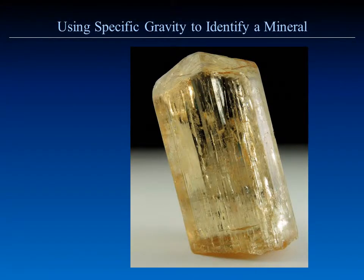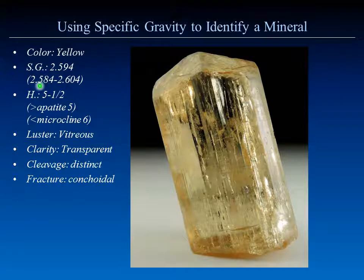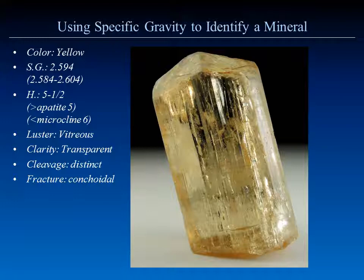Let's put this all together. We have a yellow crystal with a calculated specific gravity of 2.594 — we'll use a range of 2.584 to 2.604. A quick scratch test determined hardness of 5.5: harder than apatite but softer than microcline. It has vitreous luster, is transparent, with distinct cleavage on the bottom face and conchoidal fracture on the edges.